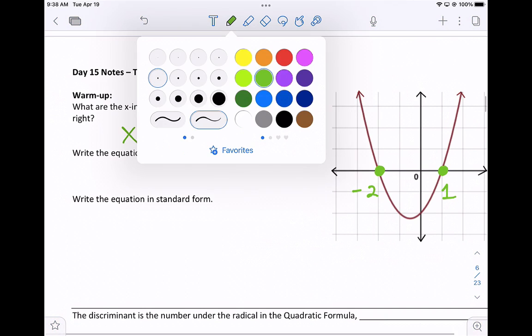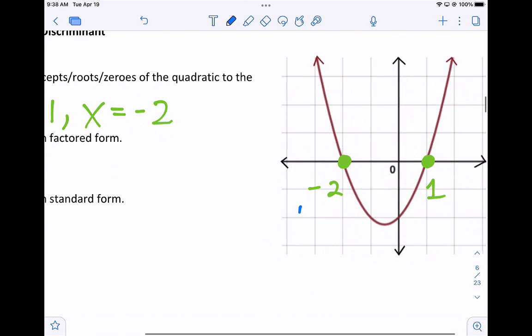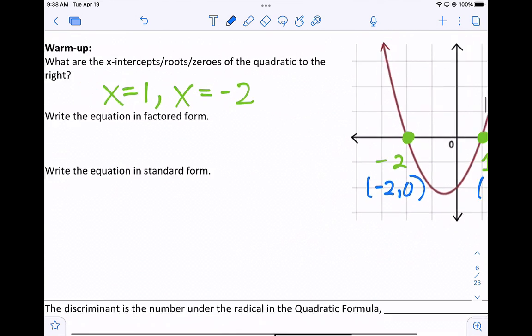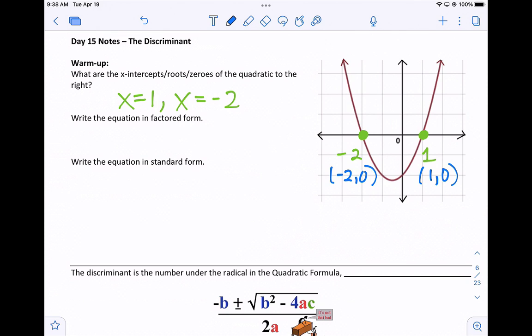You can also write them as coordinates. This coordinate is negative 2, 0, and this coordinate would be 1, 0. So either write x equals or as a coordinate, where the y value is 0.